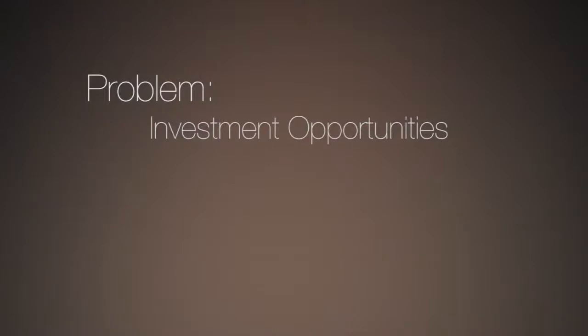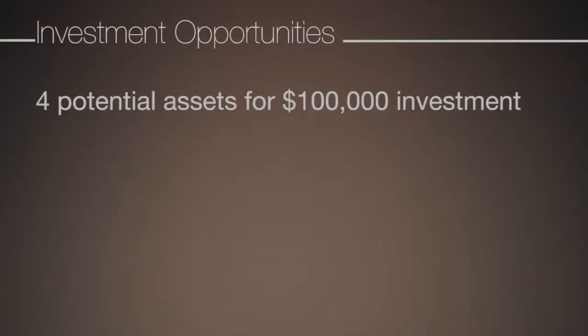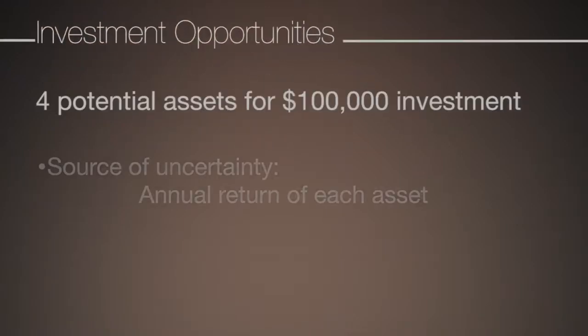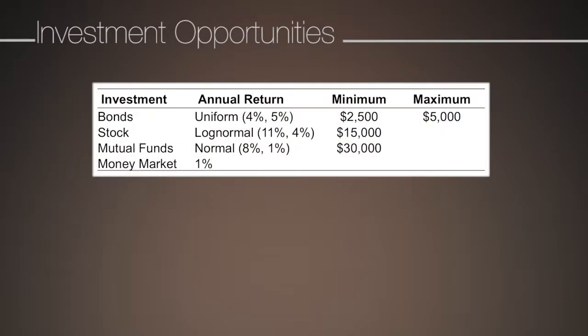Let's consider the following situation. An investor is considering four assets to invest $100,000. The annual return of each asset is the major source of uncertainty in this decision problem. Through a statistical analysis of historical data, the investor has found probability distribution functions to model the annual return of each asset. The functions and the limits on the amounts that she feels comfortable investing in each asset are shown in this table.